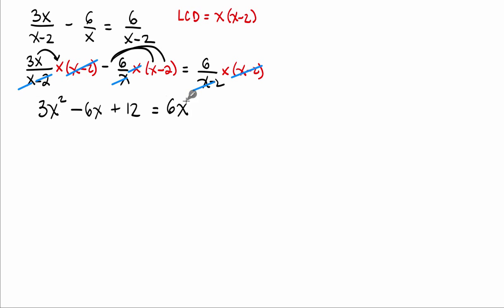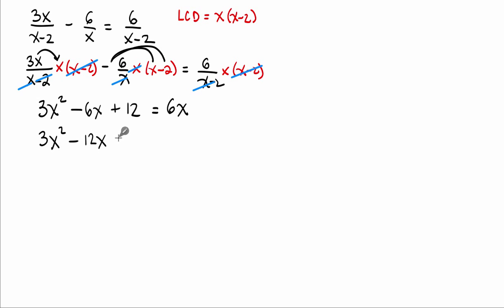As is often the case, we now have a quadratic equation. Let's get all terms to the same side. Subtract 6x from both sides, yielding 3x squared minus 12x plus 12 equals 0.